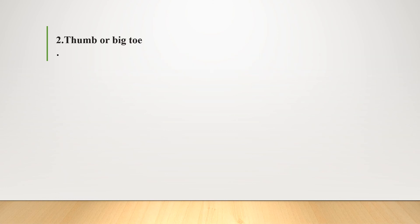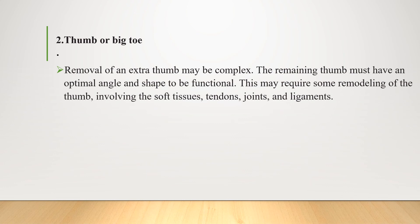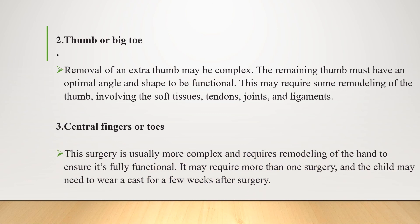If the extra digit is on the thumb or big toe side, removal may be complex — the remaining thumb must have an optimal angle and shape to be functional. This might require remodeling involving soft tissues, tendons, joints, and ligaments. If the extra digit is on the central side, surgery is usually more complex and requires remodeling of the hand to ensure full functionality. It may require more than one surgery, and the child might need to wear a cast for a few weeks afterward.